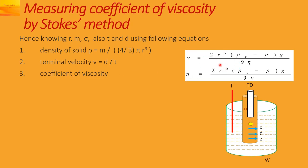For that we can use this formula which we had seen in the earlier video: v equals 2r²(ρ - σ)g/9η, where v is the terminal velocity. If we rearrange this we can find eta from this formula.